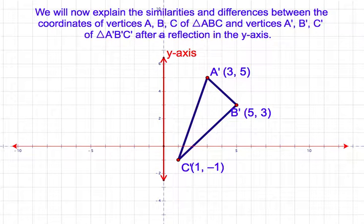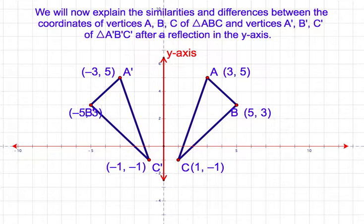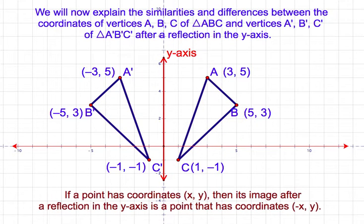We will now explain the similarities and differences between the coordinates of vertices A, B, and C of triangle ABC and vertices A', B', and C' of triangle A'B'C' after reflection in the y-axis. If a point has coordinates (x, y), then its image after reflection in the y-axis is a point that has coordinates (-x, y).